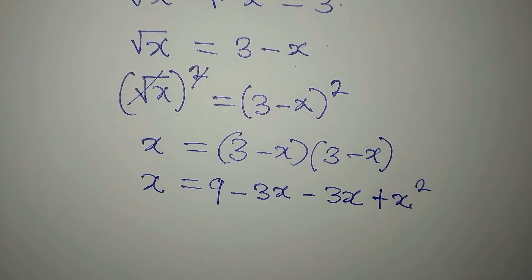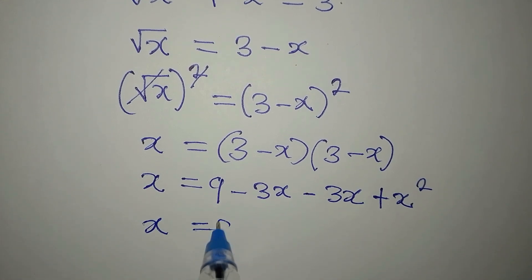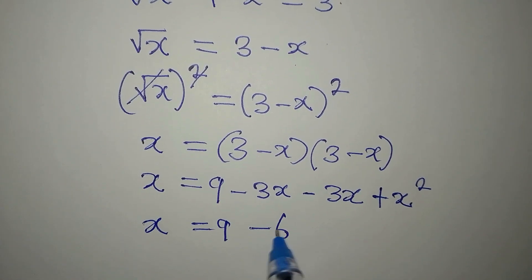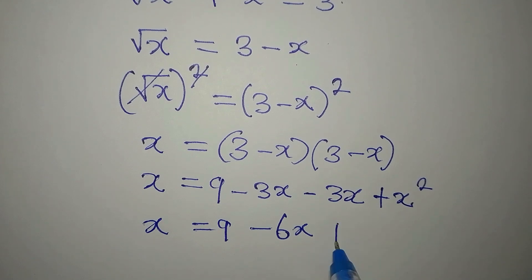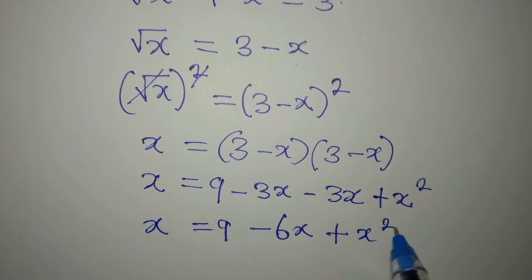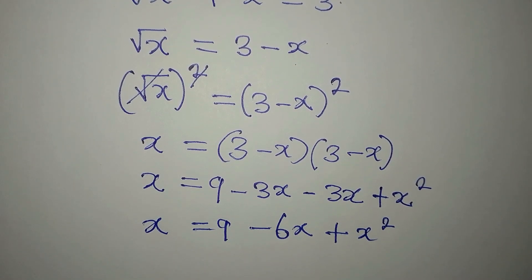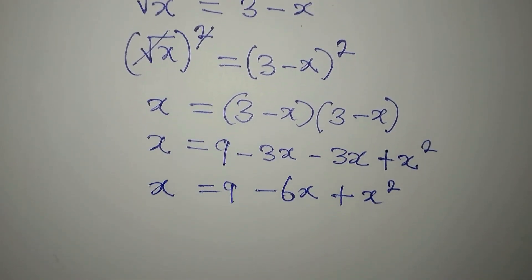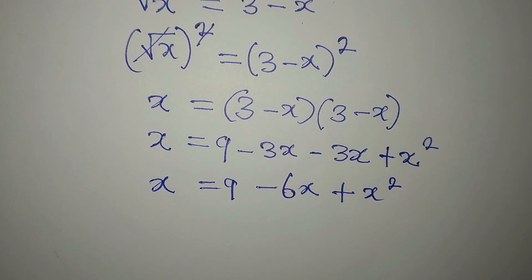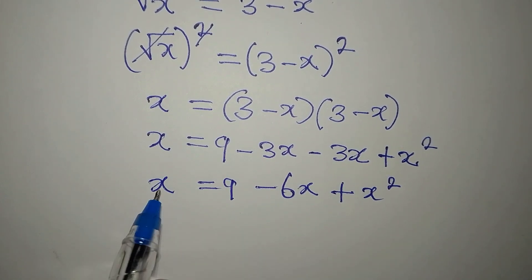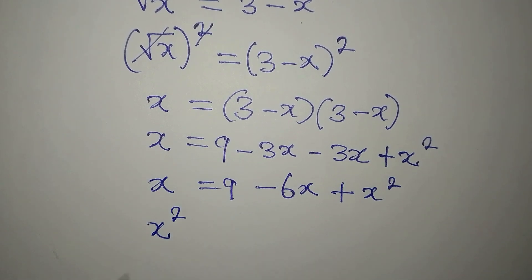So we have x equals 9 minus 3x minus 3x plus x squared, and combining the like terms minus 3x minus 3x gives us minus 6x. Now we have a quadratic equation, but we still need to bring the x terms together.